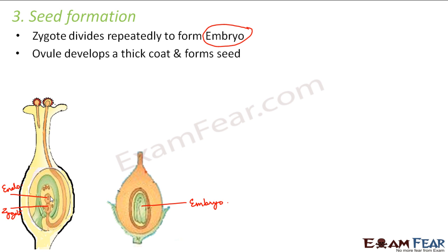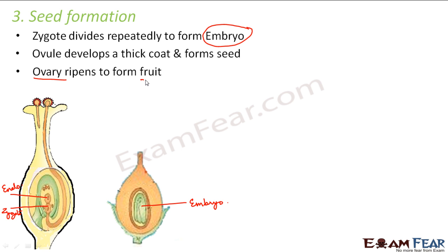The ovule, which was containing the zygote and the endosperm, now contains the embryo and the endosperm — and this ovule becomes the seed. The ovary ripens to become the fruit. The ovule becomes the seed, and for the protection of the seed there is a seed coat — a tough covering which ensures protection, keeping the seed well protected inside. The ovary, the whole spherical swollen structure, ripens into a fruit.